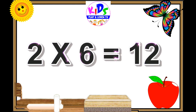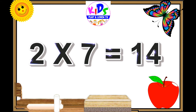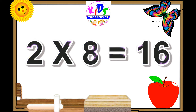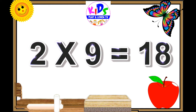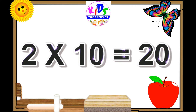Two sixes are twelve, two sevens are fourteen, two eights are sixteen, two nines are eighteen, two tens are twenty.